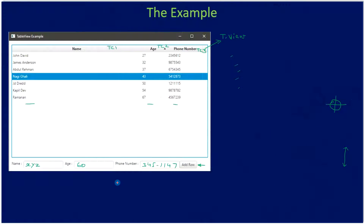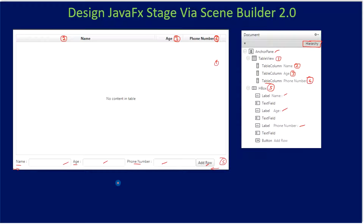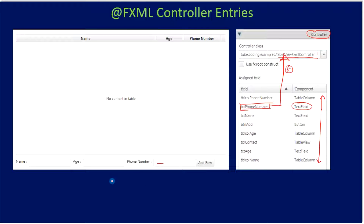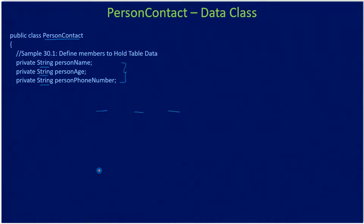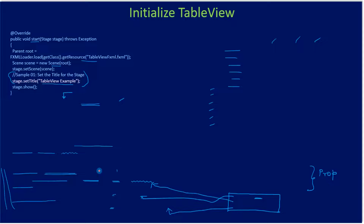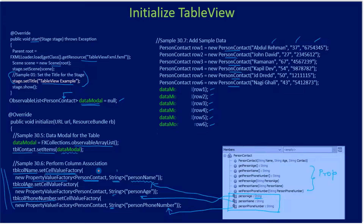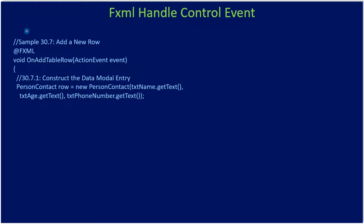First we talked about the TableView control, then we learned about the example. After that you got introduced to Scene Builder, then using Scene Builder we designed the UI. After that we made controller entries by assigning a variable for each control, then we created a PersonContact class that will supply data for the TableView. Then we initialized the TableView in the controller using the initialize method and the FXML entries.